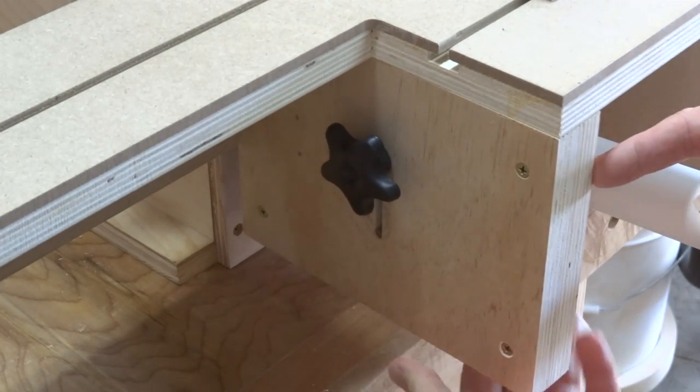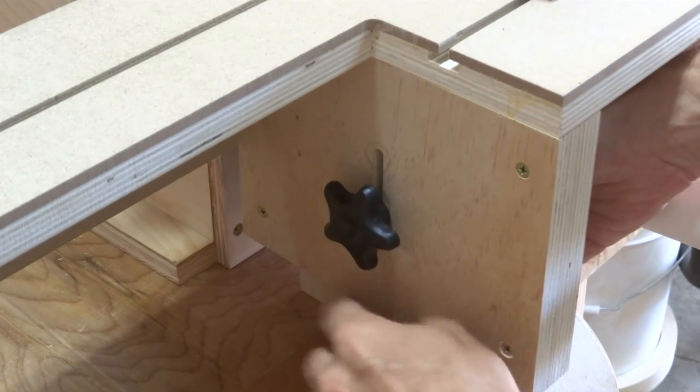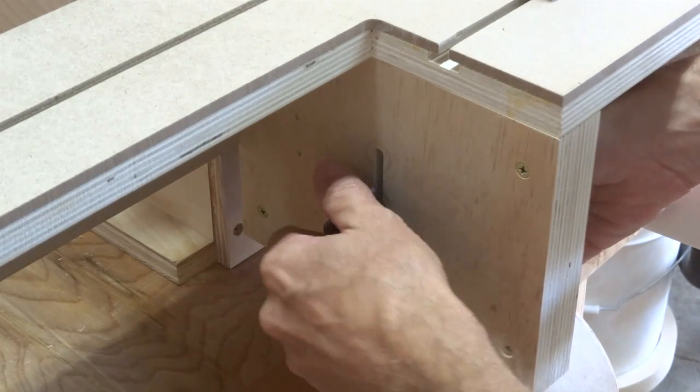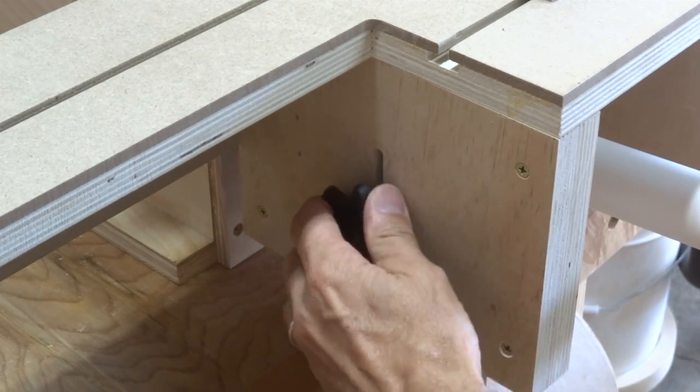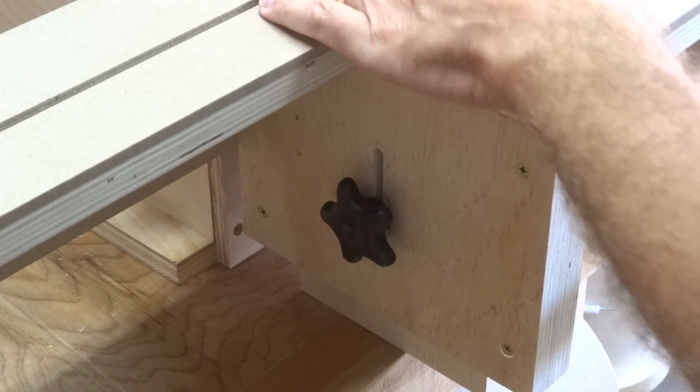The table has adjustable leg heights that can be set at a position which allows the table to rest on the work surface to which the machine is attached. This provides more stability to the table and the machine as a whole when you are applying downward drilling pressure when using the machine.